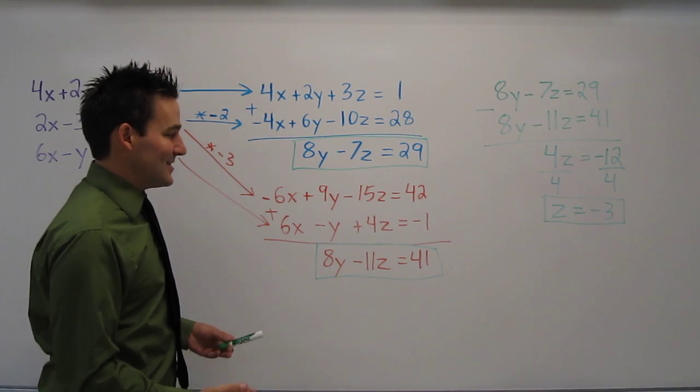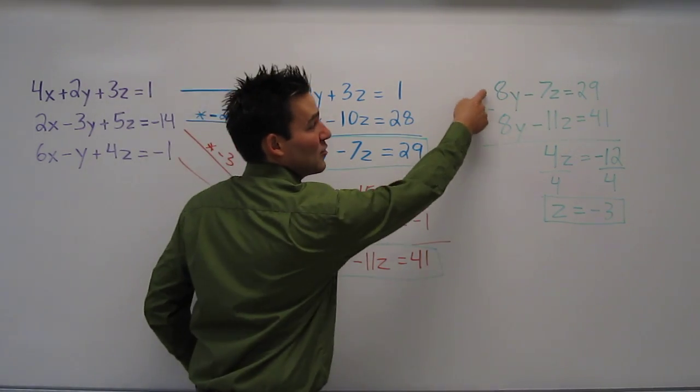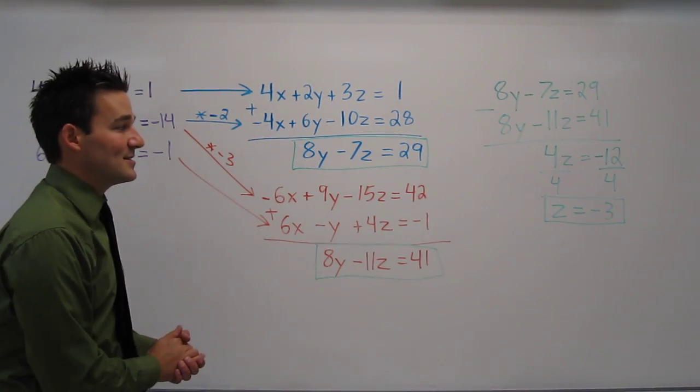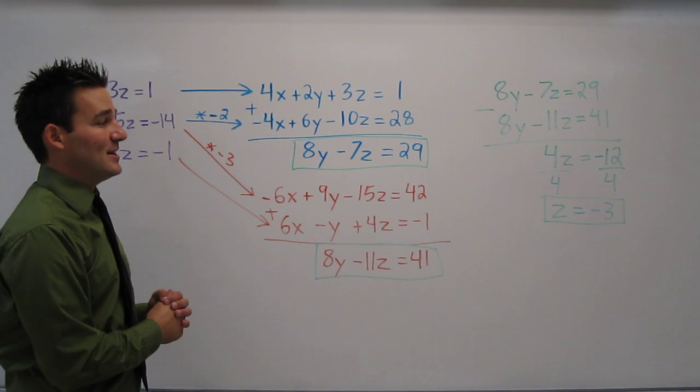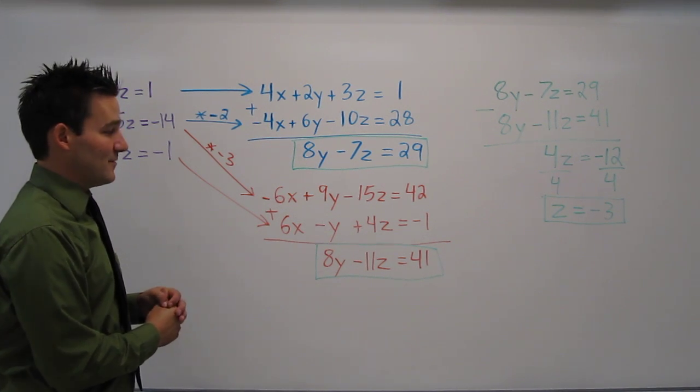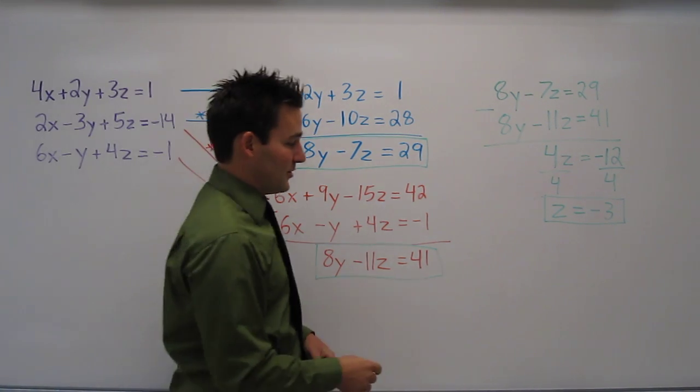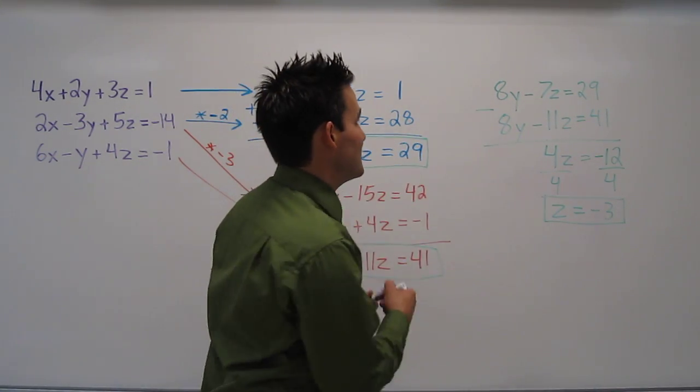Now I know what z is, and I can go back to either of these equations to determine what y is. I can do that by substituting in the value negative 3 for z. So let's do that to, well let's use this equation.